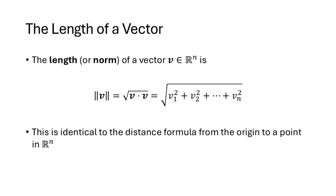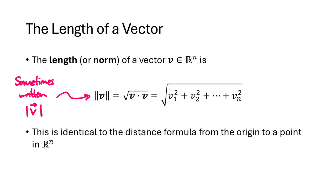We define the length of a vector, also called the norm, as the square root of the vector dotted with itself. As we saw in property 4, squaring the entries and adding up the results is always non-negative, so the square root is always defined, and the length equals zero only for the zero vector. We write double vertical lines around the vector for this notation, though single vertical lines are sometimes used.